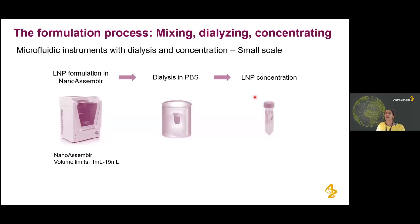The standard LNP composition we use is 50% cationic lipid, around 10% phospholipid, 38.5 mol% cholesterol, and 1.5% PEG lipid. After preparation using the NanoAssembler bench-top instrument — which can make from 1 mL to 50 mL — we dialyze against PBS in dialysis cassettes and can concentrate using Amicon ultracentrifugation filters.